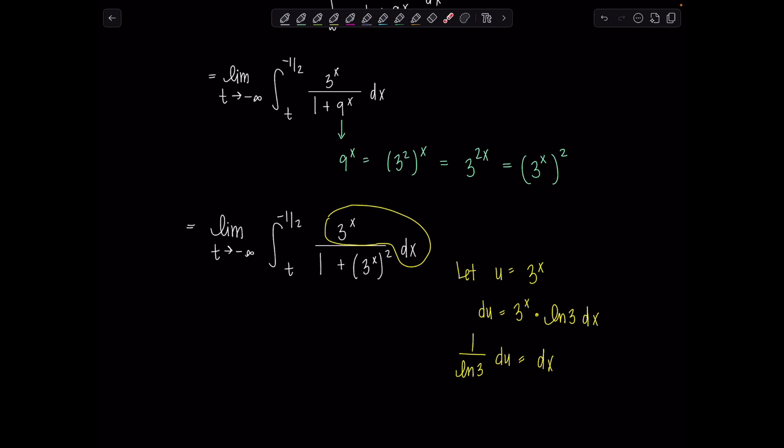So look right now t and negative one-half belong to the variable of this integral. That variable is x. So I'm going to substitute them in for x and see what my new limits are in terms of u. So u of the lower limit t is just going to be 3 to the t and then u of negative one-half that's going to be 3 to the negative one-half. That's 1 over rad 3 but I'll just leave it like this for now.